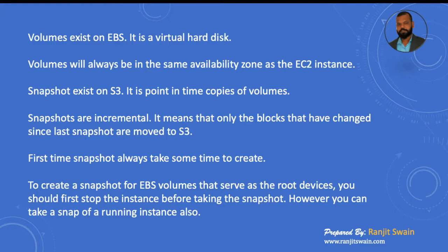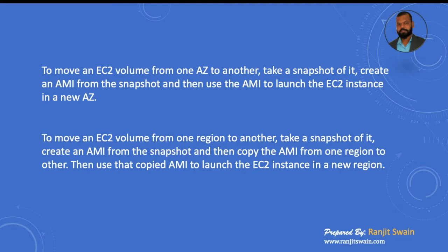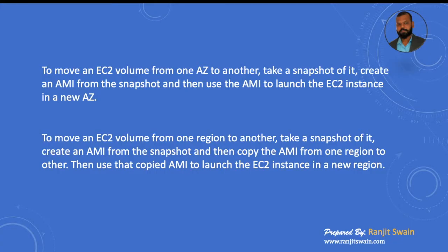To move a volume from one availability zone to another, first take a snapshot of that volume and create an image — an AMI, Amazon Machine Image — out of that snapshot. Once you create the AMI, use it to launch another EC2 instance in a different availability zone. In that way you can move the volume to another availability zone.